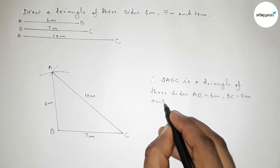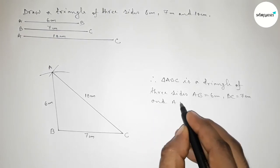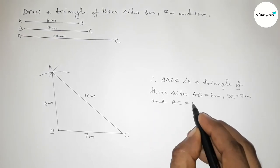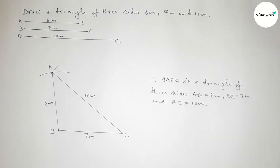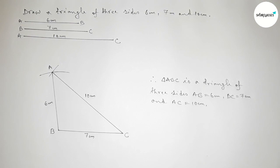The three sides are AB equals to 6 centimeter, BC equals to 7 centimeter, and AC equals to 10 centimeter. That's all. Thanks for watching — if this video is helpful to you, please share it with your friends.